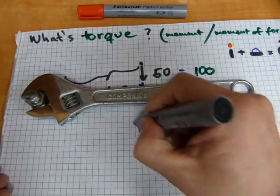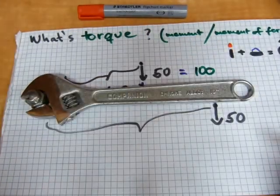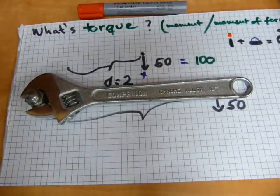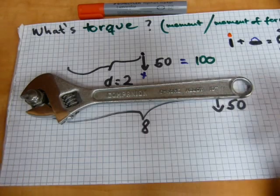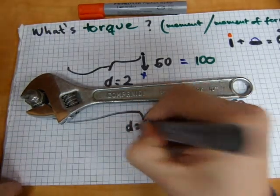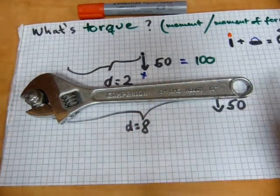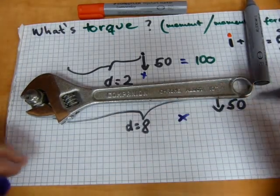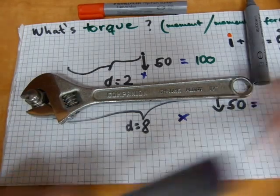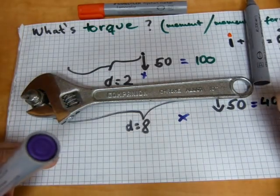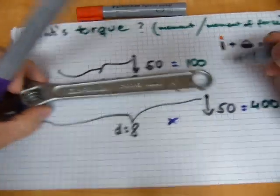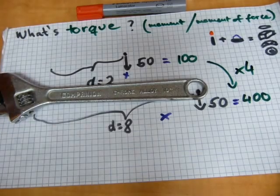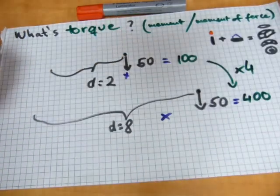You're exerting the same force of 50 units, and your leverage here will be, instead of two, in this case, how about eight? There's your distance of eight units. The amount of torque you're generating this way, eight times 50, equals 400 units of torque. Right away you quadrupled the amount of torque that you're generating.